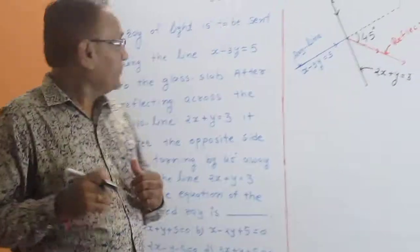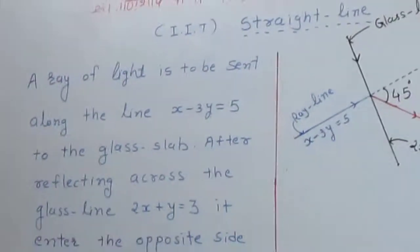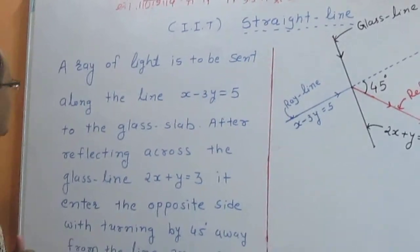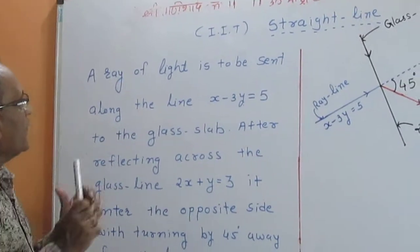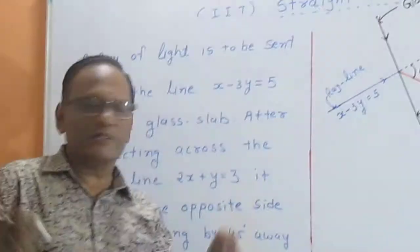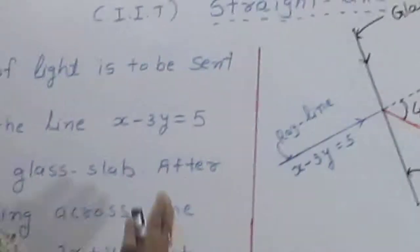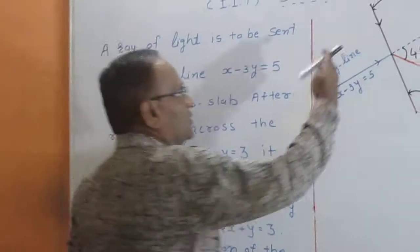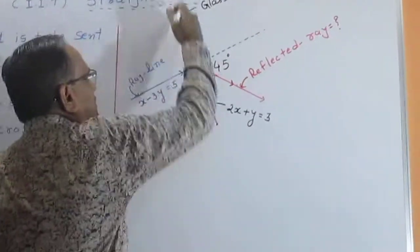First, thanks to all my subscribers. I put the best example of straight line for IIT and JEE here. The ray of light is to be sent along the line x minus 3y is equal to 5. This is the ray x minus 3y equal to 5, to the glass slab. Suppose here we put the glass slab — this type — so this is the glass line here.